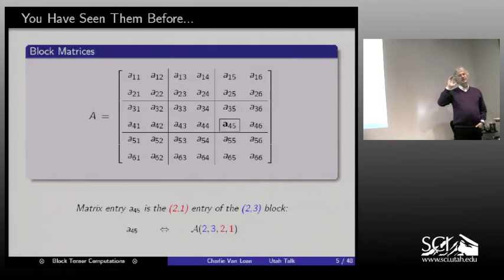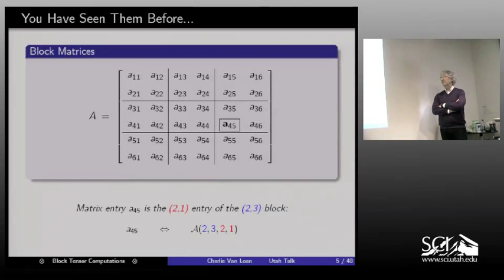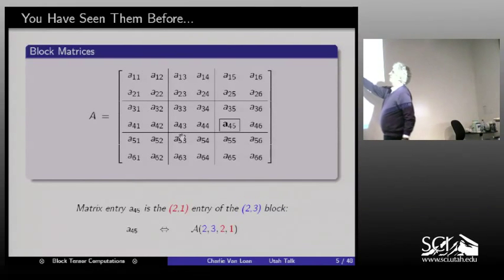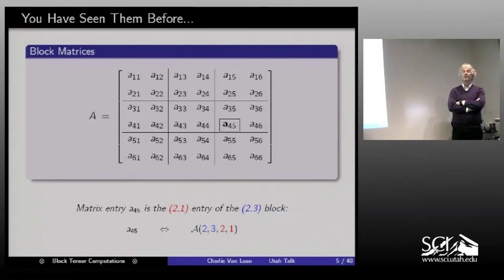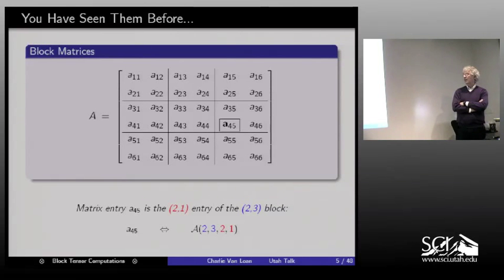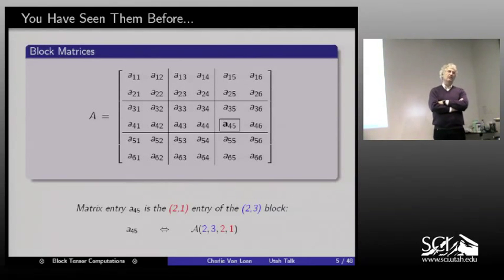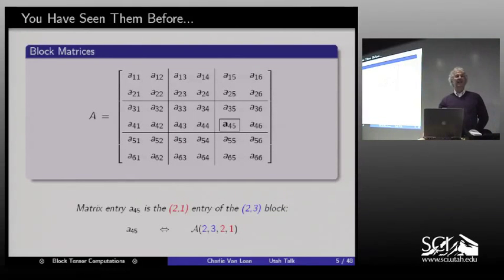What's interesting about the tensor area is that sometimes you look at an object and say 'it's a matrix,' and another time you look at the same thing and say 'it's a tensor.' A block matrix is, in its own way, a fourth-order tensor. There is the 4-5 entry of the matrix, but it's also the 2-1 entry of the 2-3 block — so I could name that entry with a 4-tuple of integers. You've been there before if you've thought about block matrices.